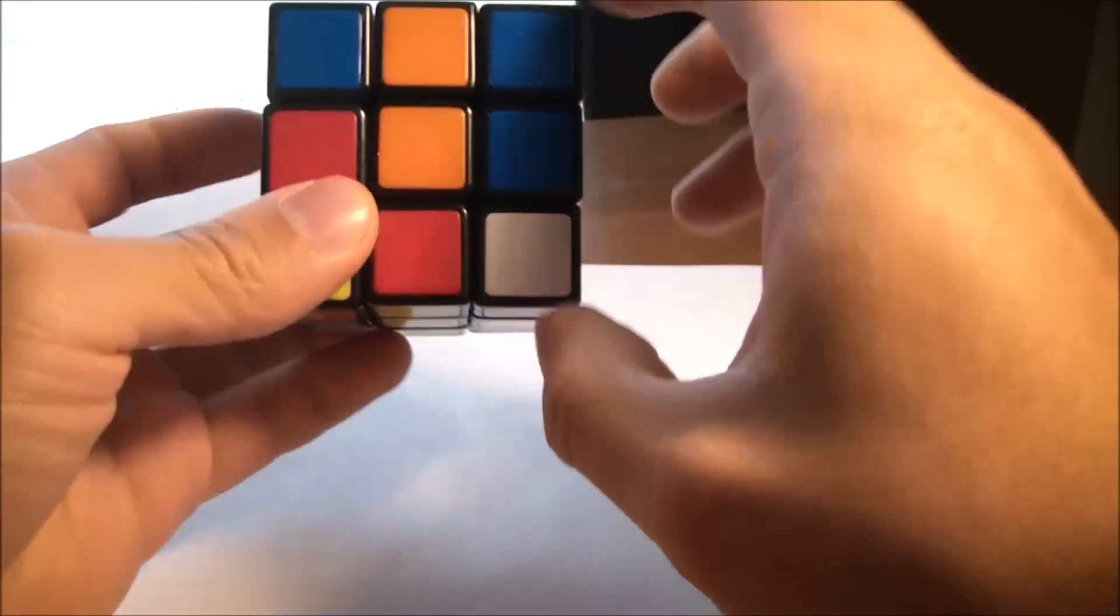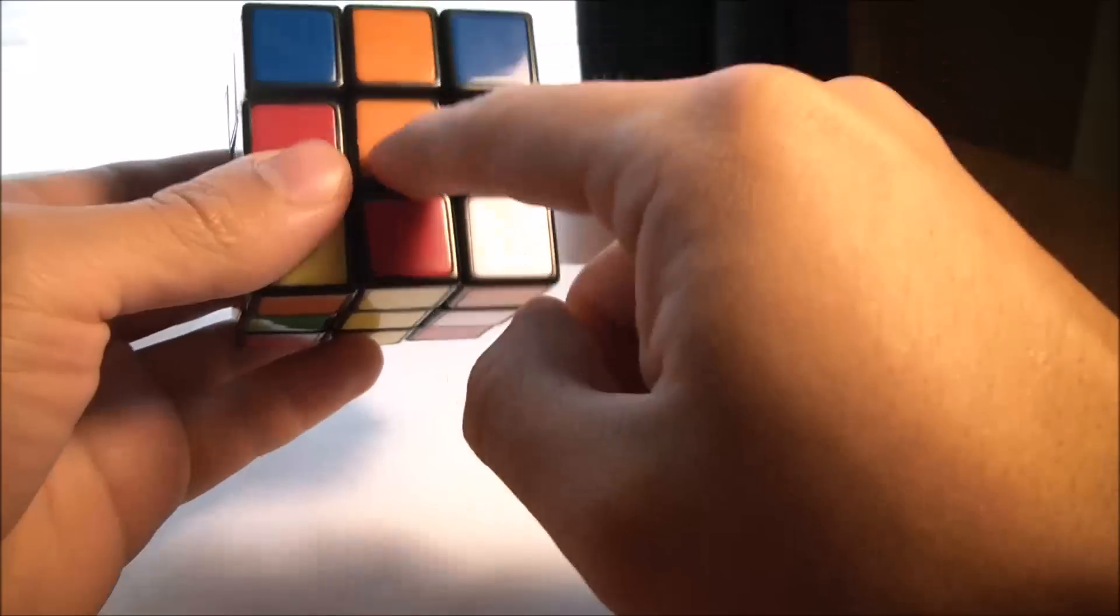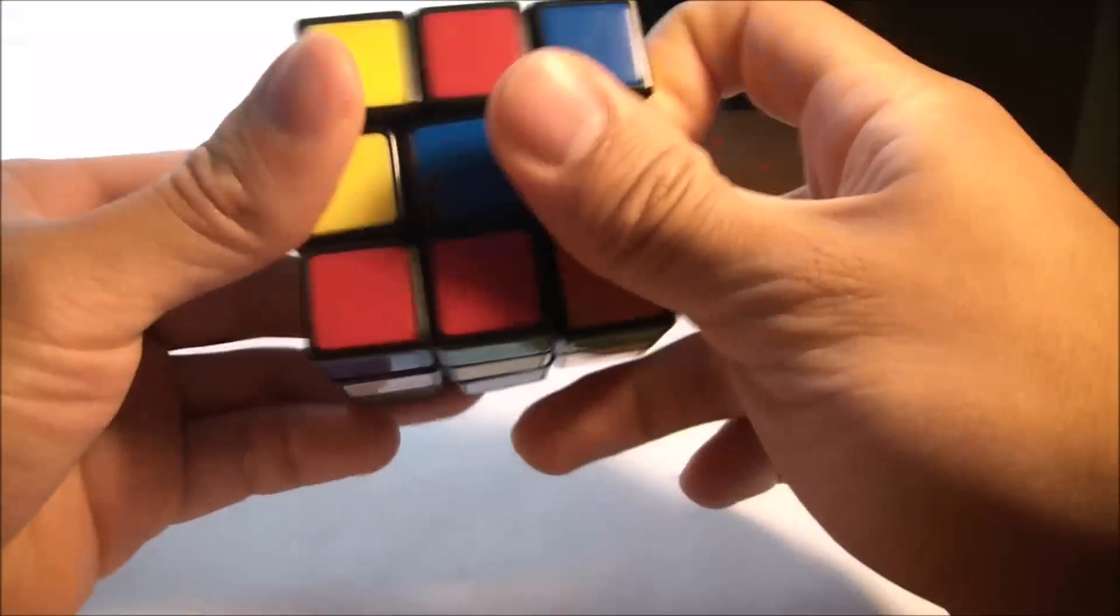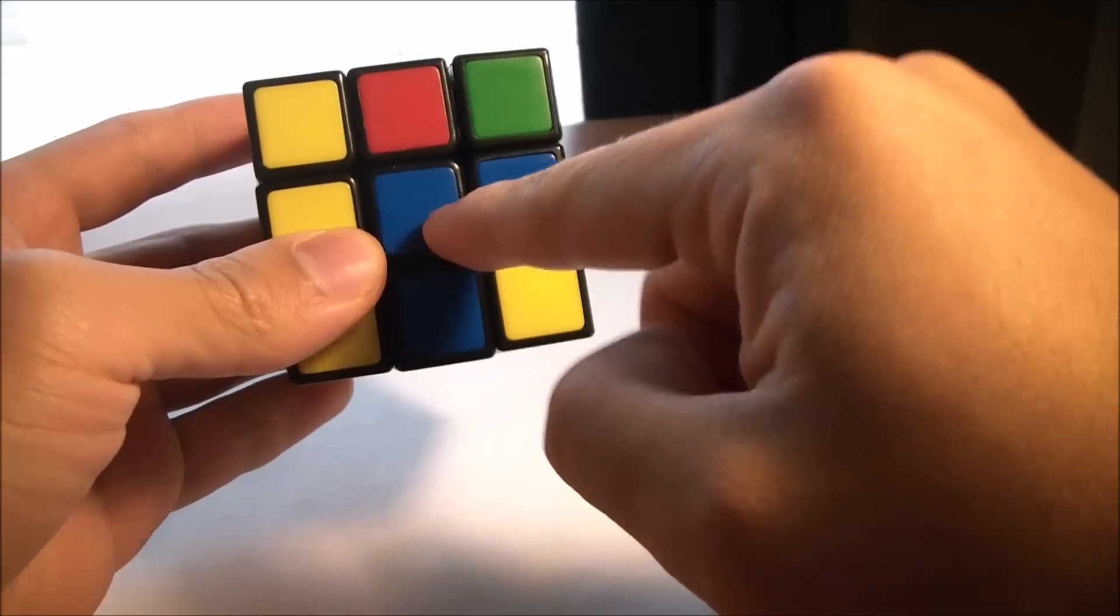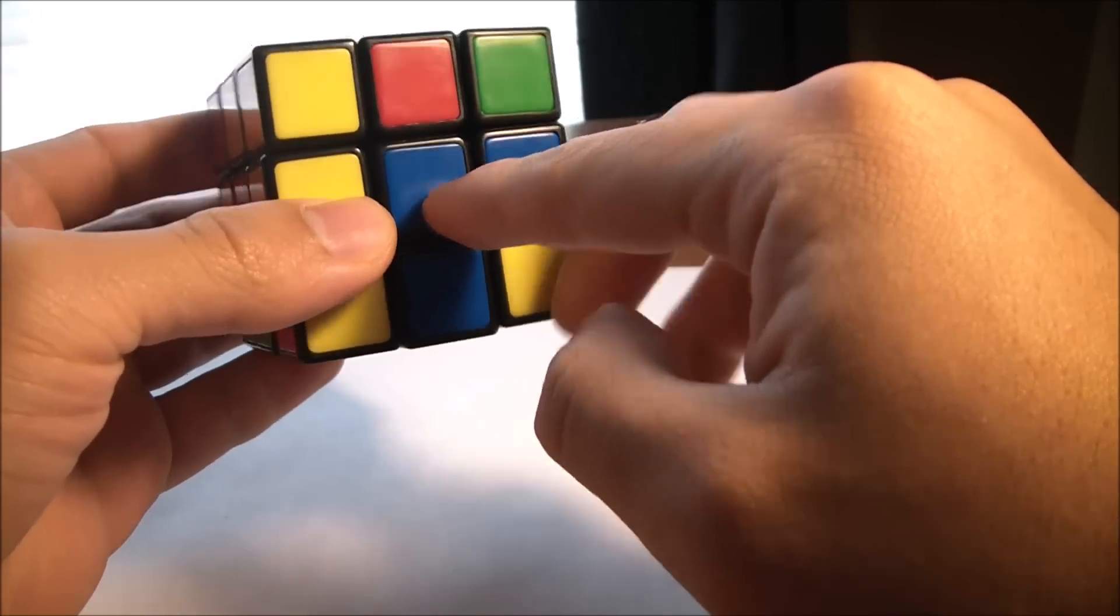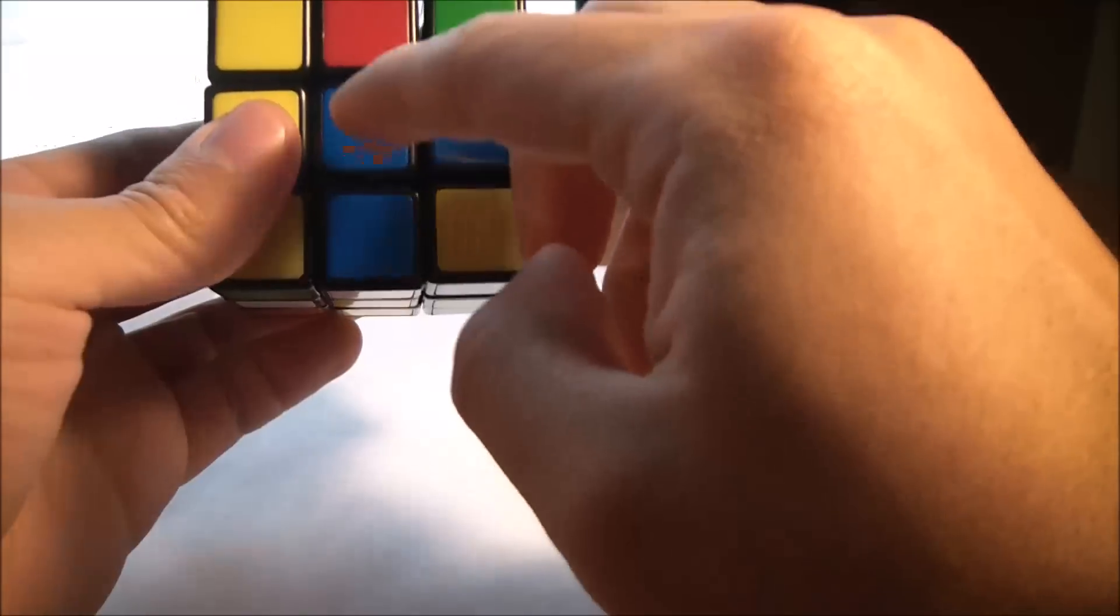It's important to know the center piece especially because the center piece, no matter what you do, doesn't move. You can't move that. So this center piece represents the color of that side.